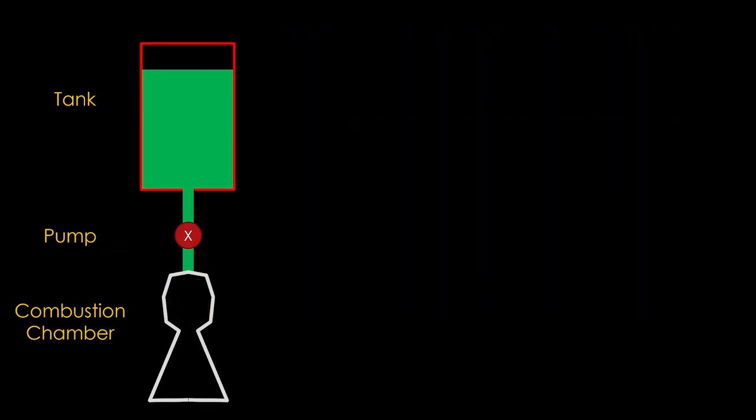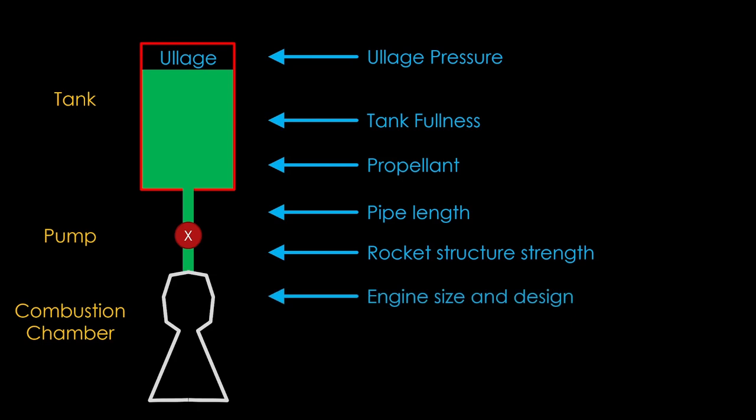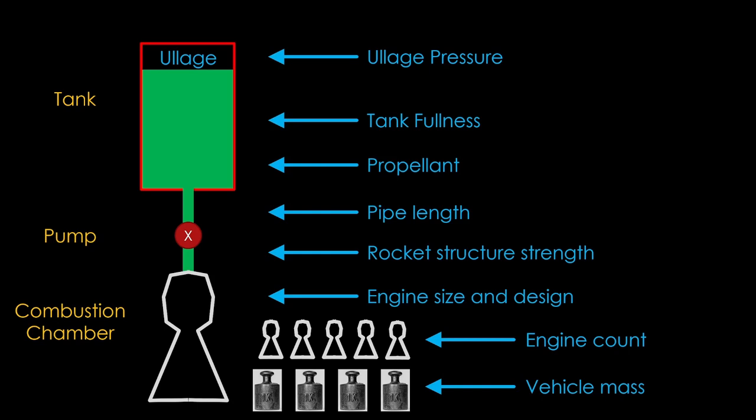Pogo is affected by a number of different factors. The pressure in the empty part of the tank, known as ullage pressure, affects the pressure to the pump. Fuller tanks produce a stronger pressure wave. Denser propellants produce stronger pressure waves, and longer pipes produce stronger pressure waves. The rocket structure itself can flex and change the length of the pipe. The size and design of the engine affects how smooth the combustion is, and the effect of pressure waves on combustion pressure. More engines will reduce the thrust variation due to random fluctuations in an individual engine. And finally, the vehicle mass matters. When a stage is full of fuel and heavy, a given amount of thrust variation produces a small acceleration variation. As the stage uses propellant and gets lighter, that same thrust variation produces a much greater variation in acceleration, and therefore a stronger pressure wave.